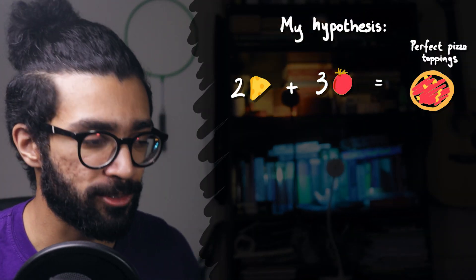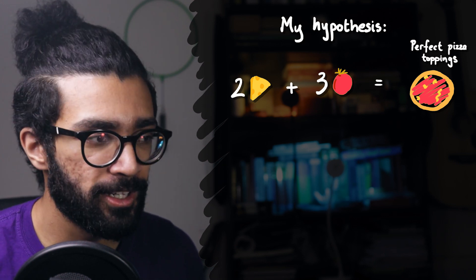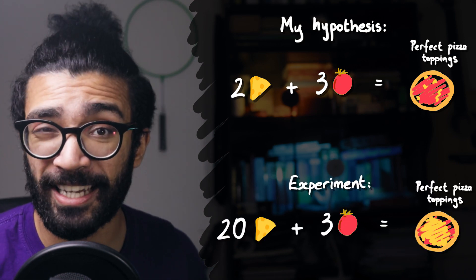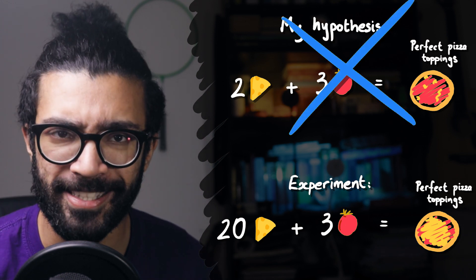After all, in the world of physics, experimental evidence is the most important thing. It doesn't matter how cool or interesting or beautiful your theory is. If experimental evidence goes against it, then unfortunately, it's going to have to be tweaked or thrown away entirely.